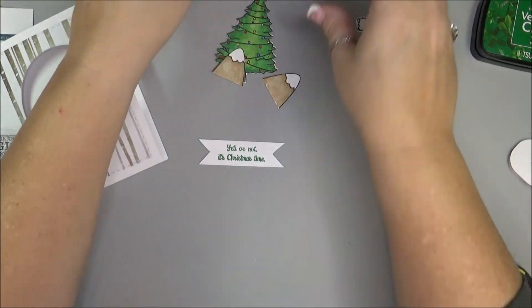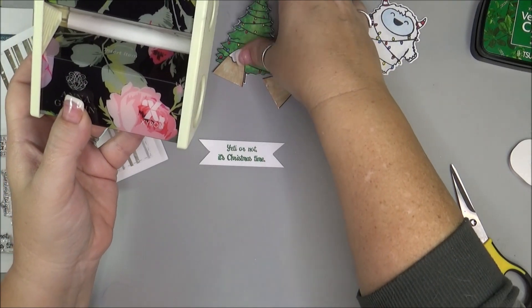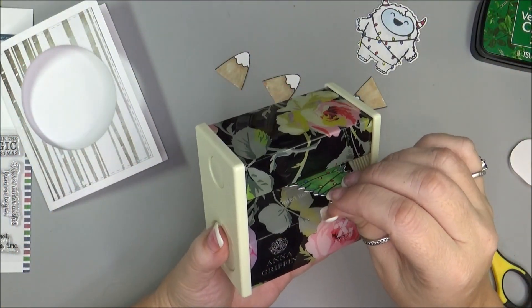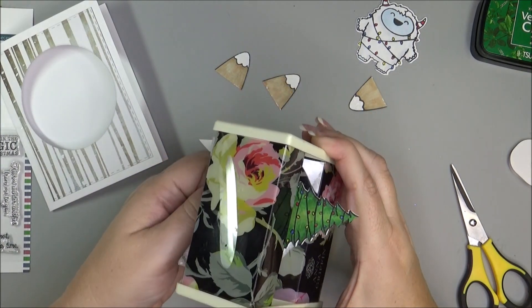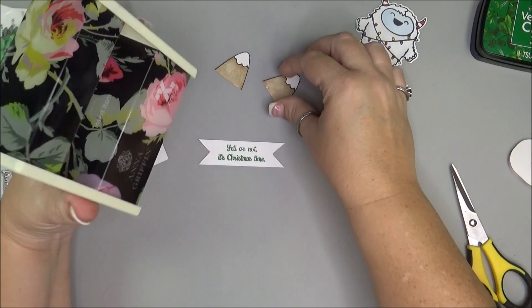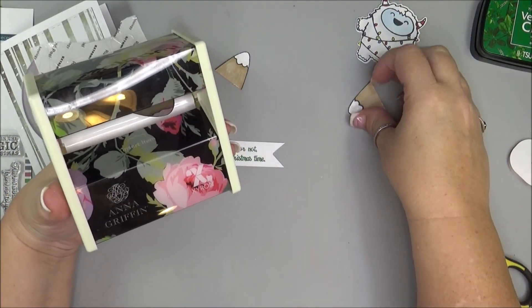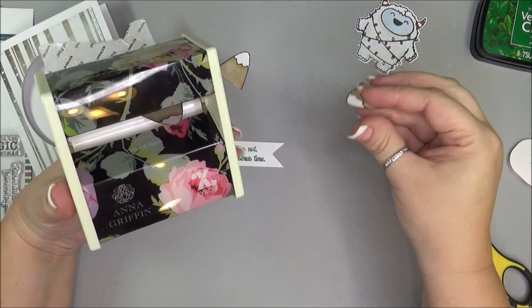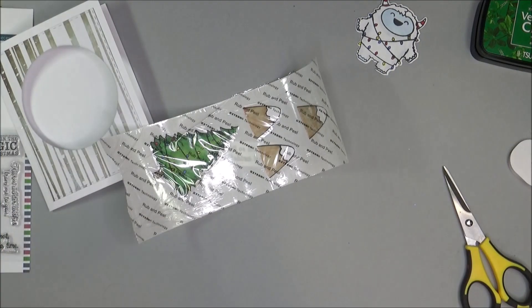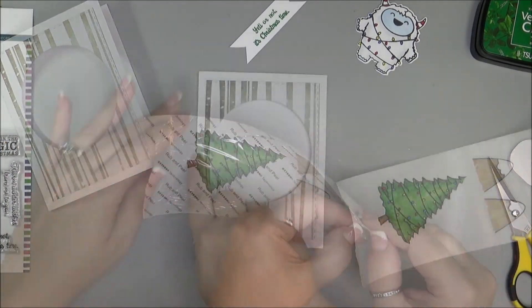Next, I am going to take my Xyron sticker maker. I'm going to put each of these in there. Pull it through. I'm going to do the mountains. I am not going to do the Yeti because I'm going to do something different with him.